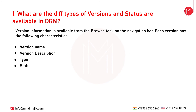The first question is: what are the different types of versions and statuses available in DRM? Version information is available from the Browse task on the navigation bar. Each version has the following characteristics: version name, version description, type, and status. There are basically three types. The first is Normal — a version that can be edited and its status can be modified. The second is Baseline — a copy of the normal version at the time it was saved, with a status of Expired. The third is As-Of — a historical view of a normal version based on a time period or transaction ID.